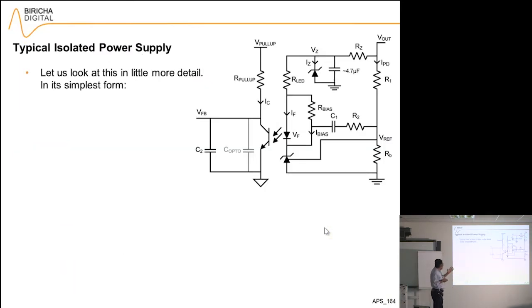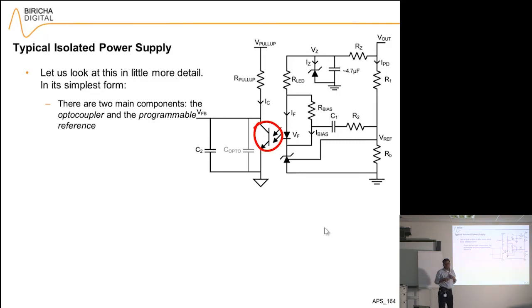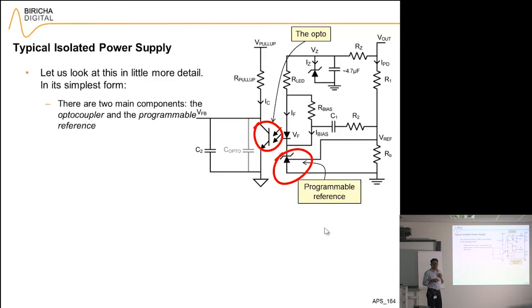So if I look at the typical isolated power supply in its simplest form, you can see that there are two main components that are different to a standard power supply: the optocoupler and the programmable reference. That's the optocoupler and that's the reference.